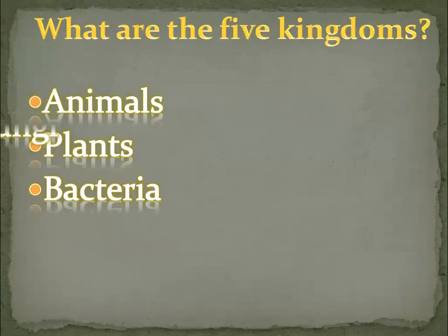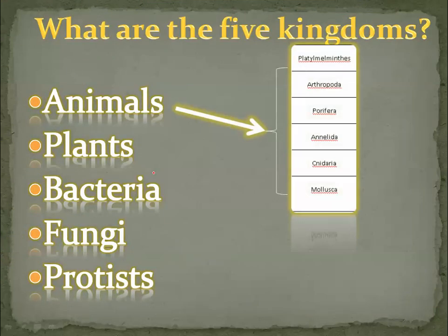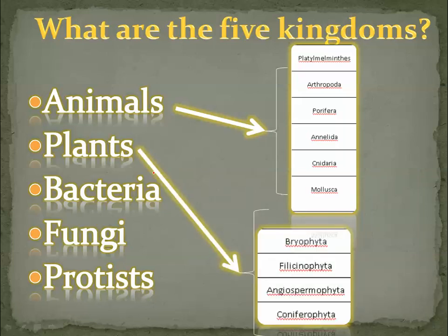Five kingdoms — you've learned this before: animals, plants, bacteria, fungi, protists. You need to know six different phyla for animals, listed right there, and four different phyla for plants. These names: Platyhelminthes, Arthropoda, Nematoda, Annelida — oh, there's a spelling mistake here, that's an H not an M — Platyhelminthes, Arthropoda, Nematoda, Annelida, Cnidaria — notice it's a C but it's silent — Mollusca, Bryophyta, Psilophyta, Angiospermophyta, Coniferophyta.